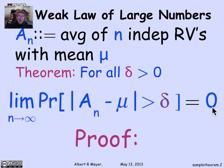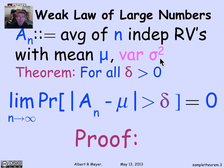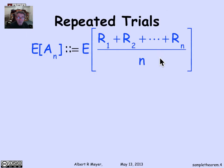In the proof, there's one extra fact we're going to use that we didn't explicitly mention: not only are all of these random variables identically distributed and independent, but we're actually going to assume that they have a variance. Not every random variable has a finite variance, even if it has a finite mean — in fact, there are random variables that don't even have finite means, and we'll look at them on the last day of class. So we're going to explicitly assume that all of these random variables have the same variance, namely sigma squared.